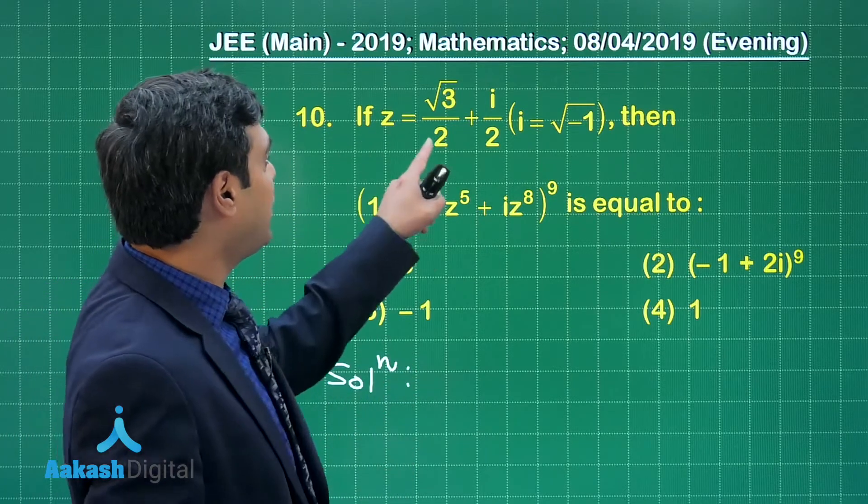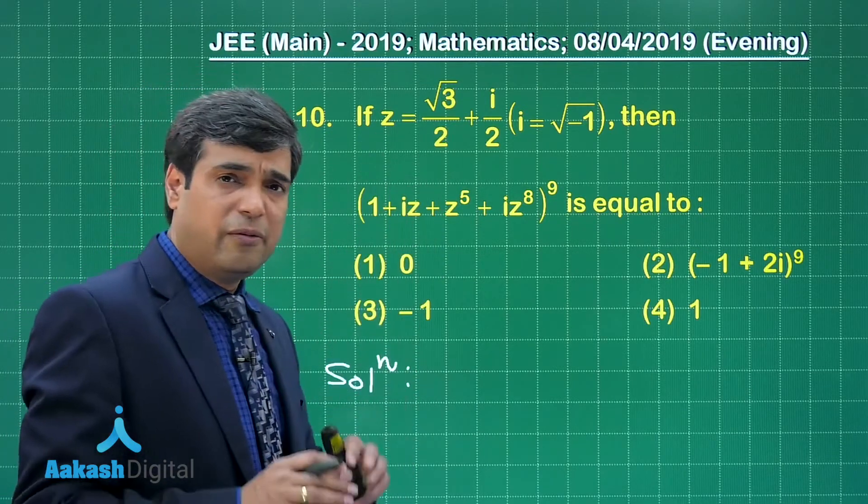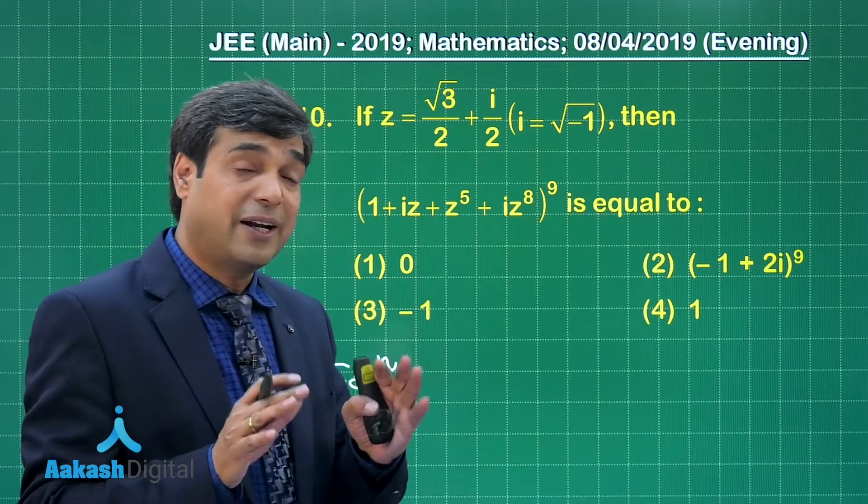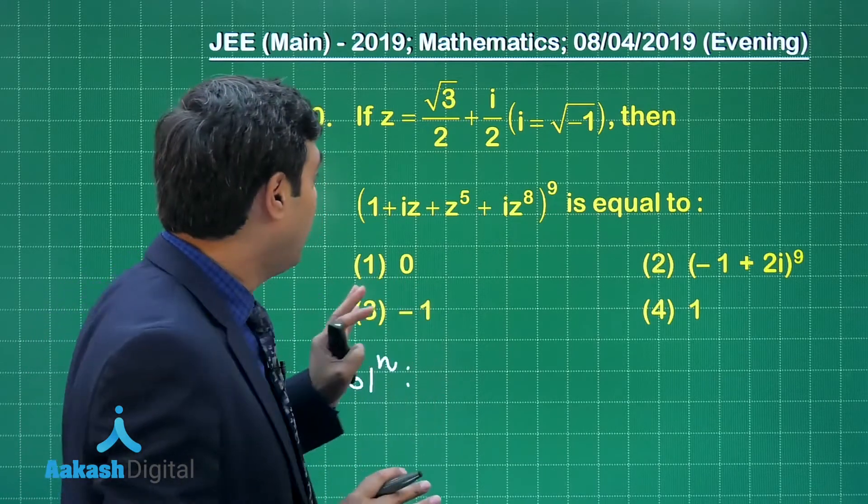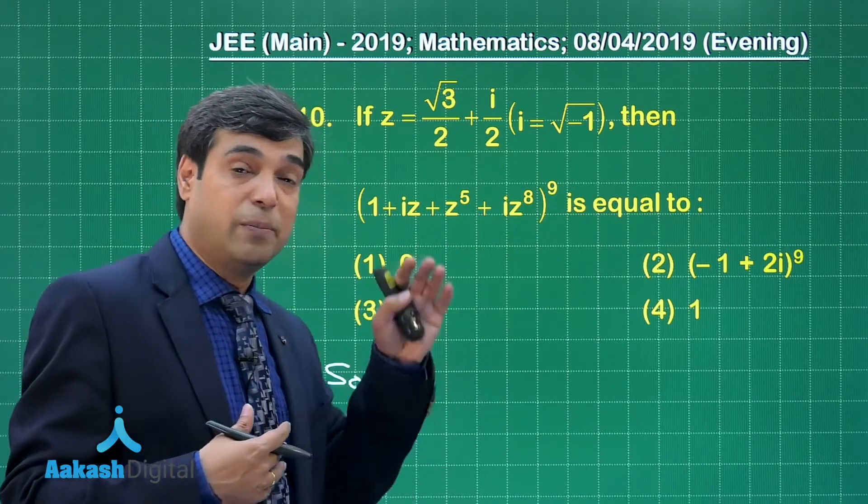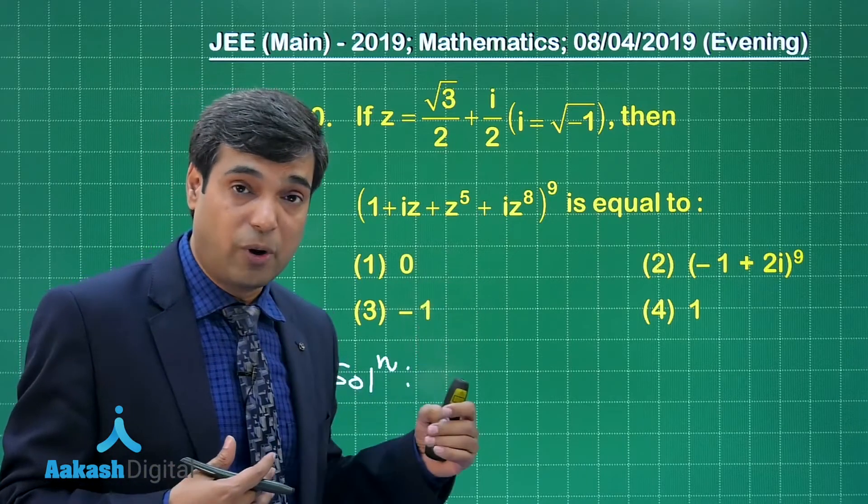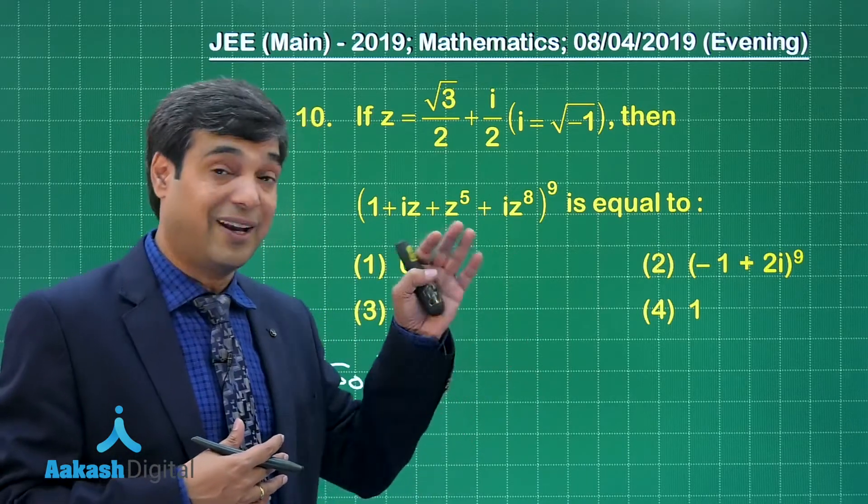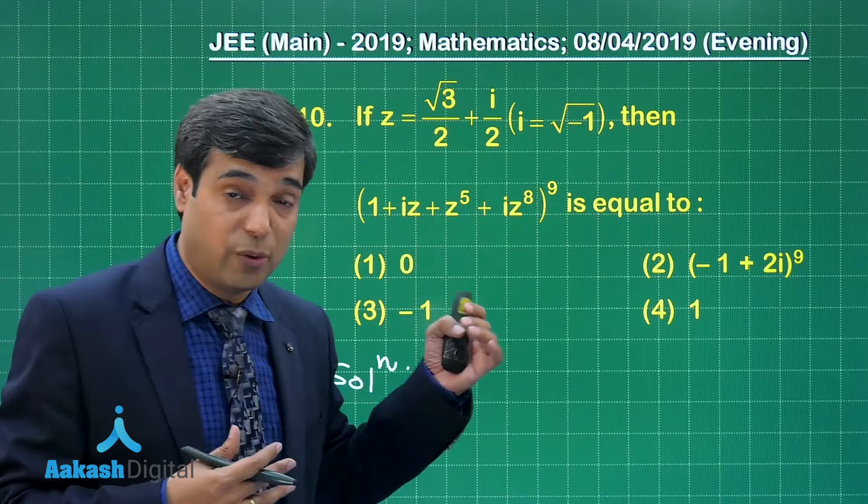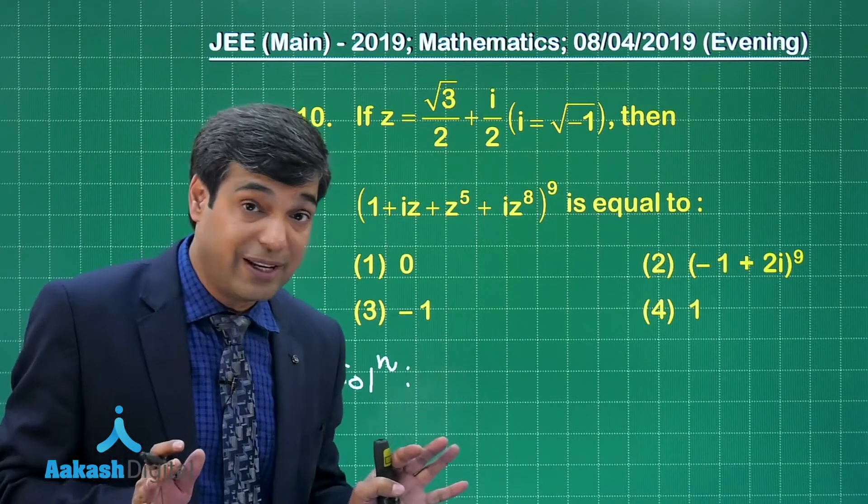Given is √3/2 + i/2, we can change it towards omega, that is cube root of unity. We know that omega is actually (-1 + √3i)/2 or the counterpart (-1 - √3i)/2. Any of the two can be taken as omega.